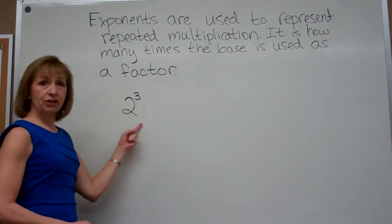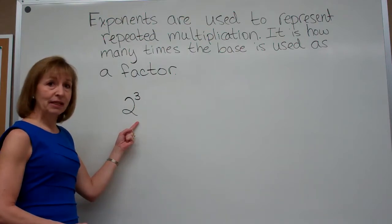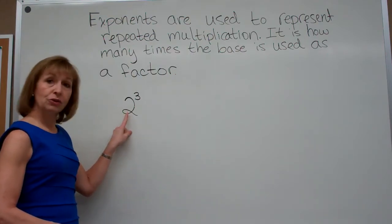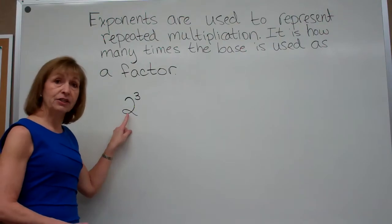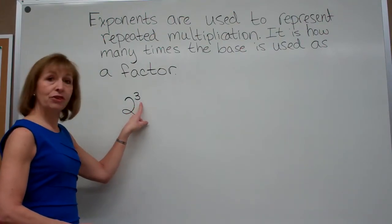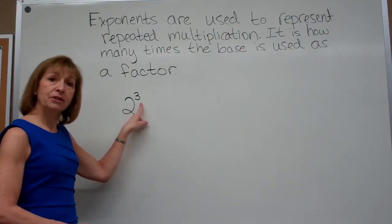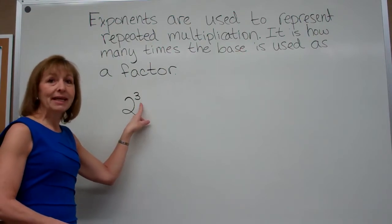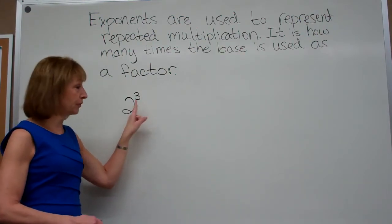In this expression, 2 to the 3rd, this is an exponential expression. The 2 is the base, it's the value that's repeatedly multiplied, and 3, the number that's smaller and up and to the right, is the exponent. It tells you how many factors of that base you are to use.